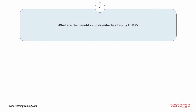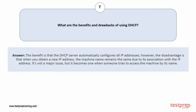Question number 7: What are the benefits and drawbacks of using DHCP? The benefit is that the DHCP server automatically configures all IP addresses. However, the disadvantage is that when you obtain a new IP address, the machine name remains the same due to its association with the IP address. It's not a major issue, but it becomes one when someone tries to access the machine by its name.